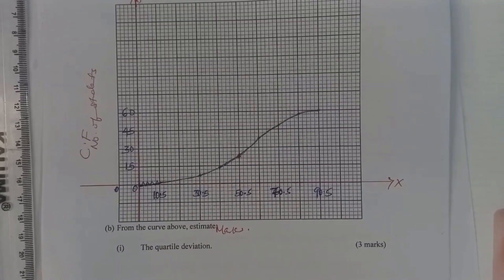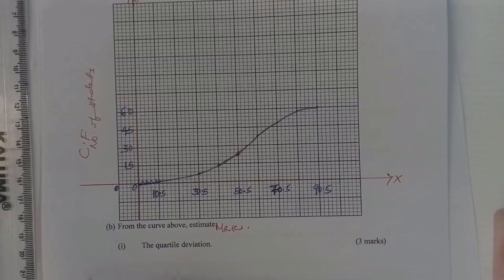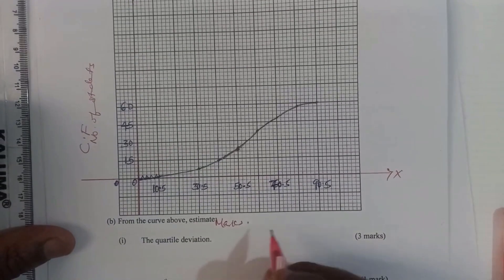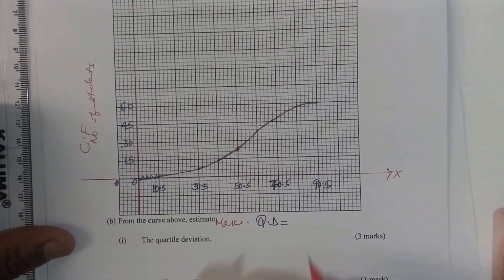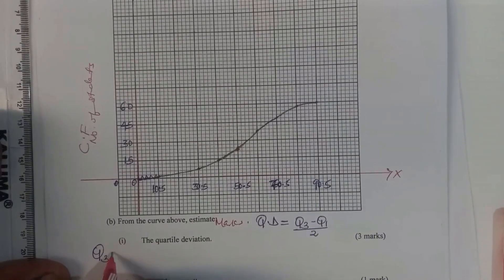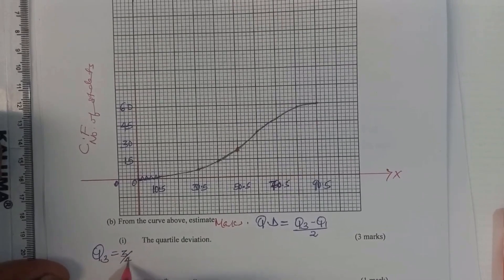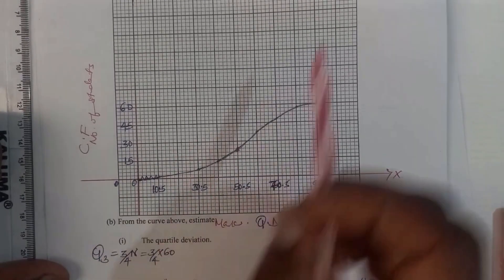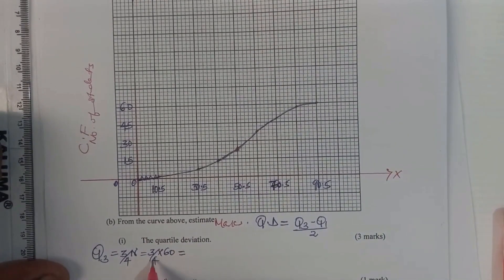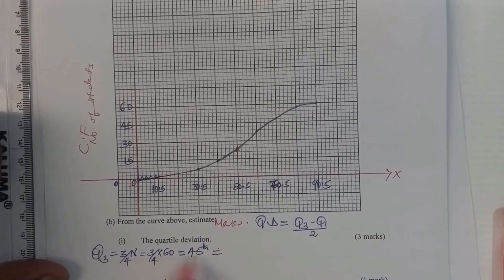Now let's go to the questions. The first question asks us to estimate the quartile deviation from the curve. The quartile deviation is given by (Q3 − Q1) / 2. Q3 is the upper quartile, obtained at the position 3/4 × N = 3/4 × 60 = 45. So the 45th student gives us the upper quartile.